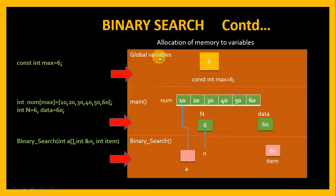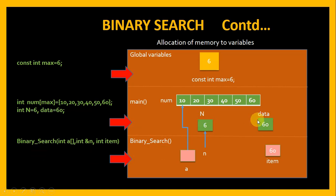This is the memory diagram for binary search, divided into three parts: global variables, main, and binary search. The global variable max has value 6. In main, array num is declared and initialized with 6 elements, n is 6, and data contains 60 — the element we are searching for. In the binary search function, a is an array pointing to num, n and N share the same memory space (passed by reference), and item is the value 60 we are looking for.